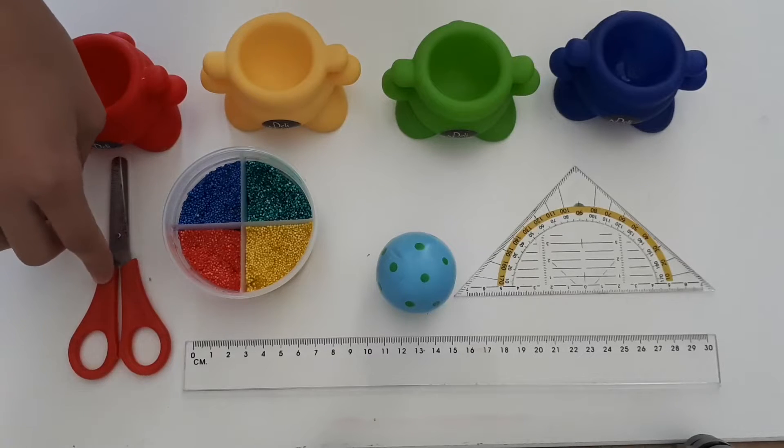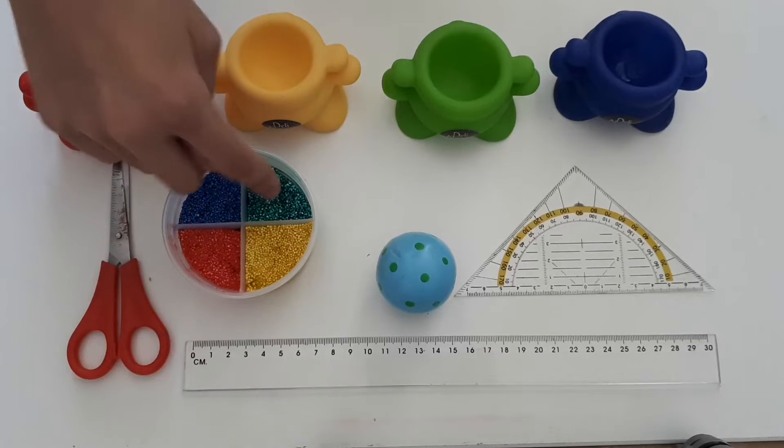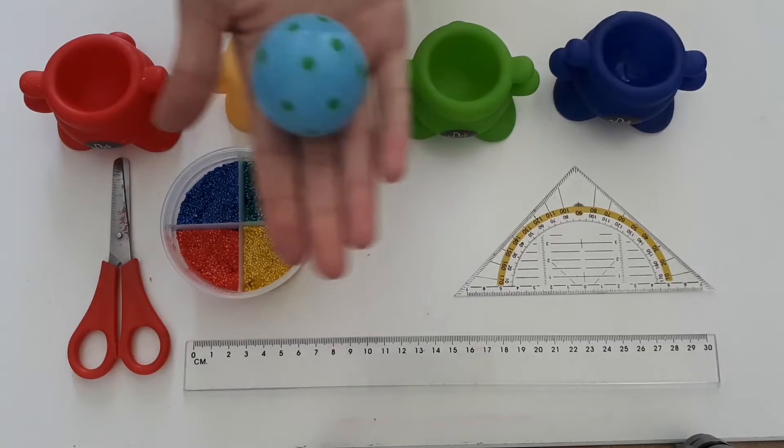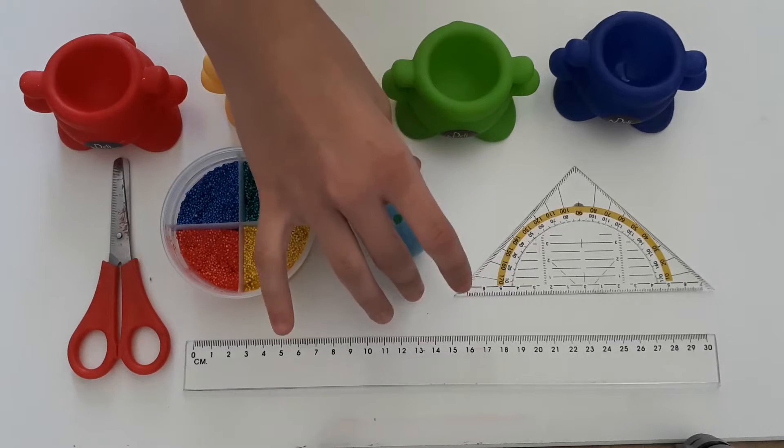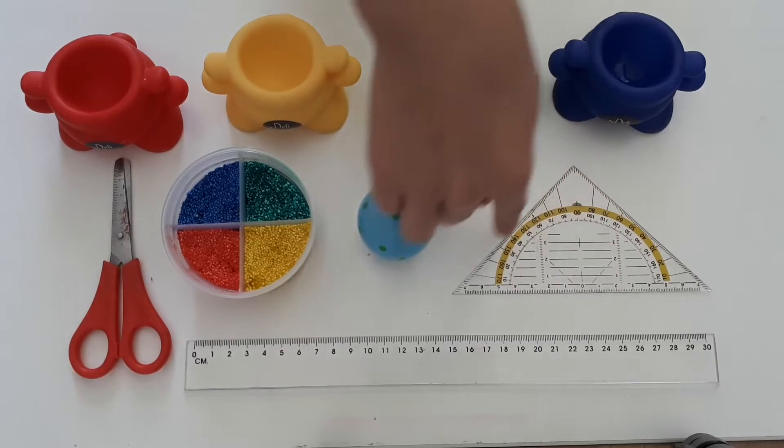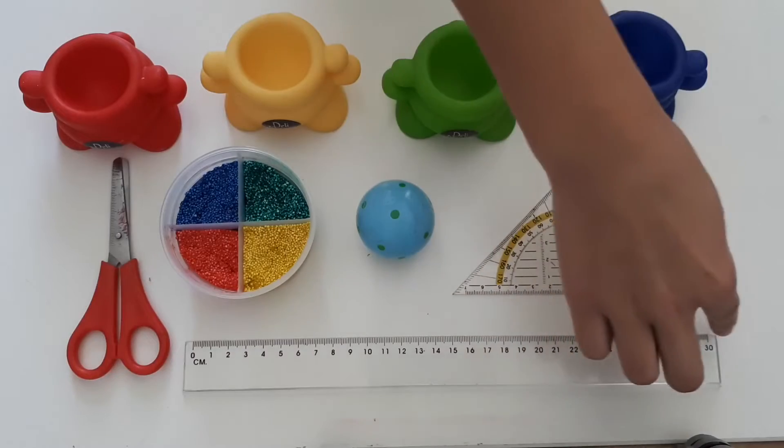Scissors. Red, yellow, green and blue. This is a ball and it has some polka dots on it. This is a ruler. It's a triangle. This is a ruler. It's a long rectangle.